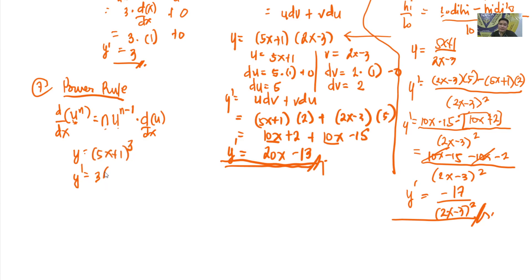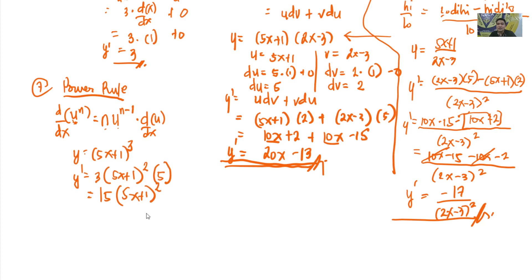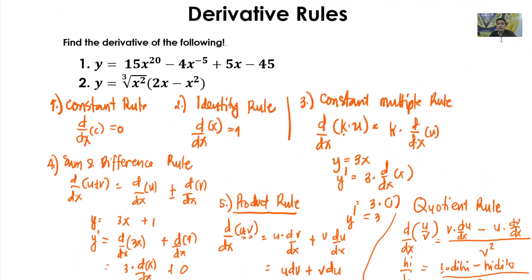So y prime: bring down the exponent 3, copy the base (5x + 1), subtract 1 from the exponent to get 2, then multiply by the derivative of (5x + 1) which is 5. So y prime equals 3 times 5 times (5x + 1) squared, which is 15(5x + 1) squared. In the next video, we will solve: the derivative of y = 15x^20 − 4x^(−5) + 5x − 45, and the cube root of x squared times (2x − x squared).